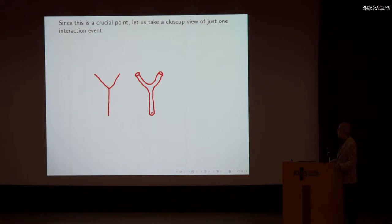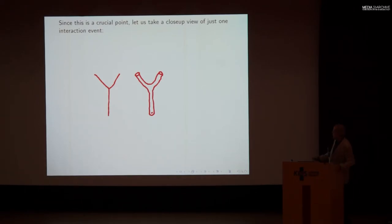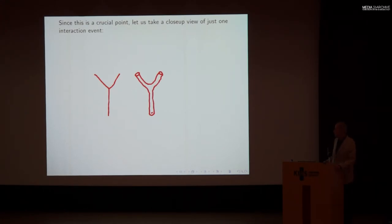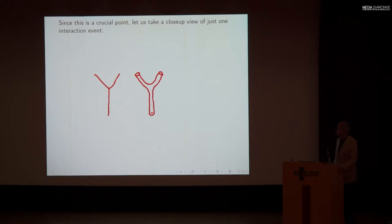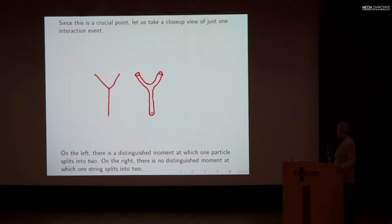A question one might ask: is there not a last time, in the stringy picture, where there was one string and not two? That's a very good question, testing our knowledge of relativity. Because Einstein taught us that what is time depends on the observer. One observer might think this is the moment of last time with only one string, but another observer thinks the lines of constant time are at an angle, and then a different moment would be the last with only one string. So Einstein would teach us that in the smooth stringy picture, there's no distinguished event anywhere. On the left there is a distinguished moment at which one particle splits into two; on the right there is no such distinguished moment.